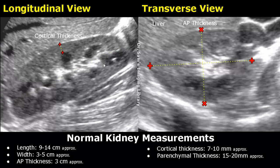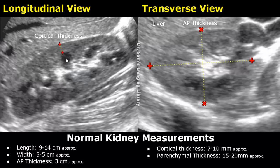Cortical thickness can also be measured in the longitudinal view. This hyperechoic line is the renal capsule. One caliper is placed at the interface between the renal capsule and the cortex, right here, and the second caliper is placed at the base of the renal pyramid, right here.